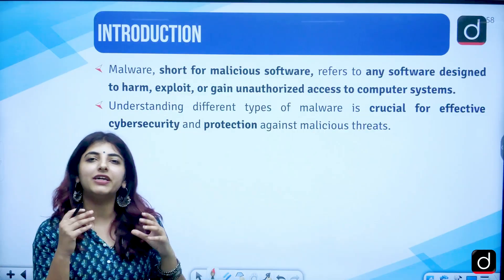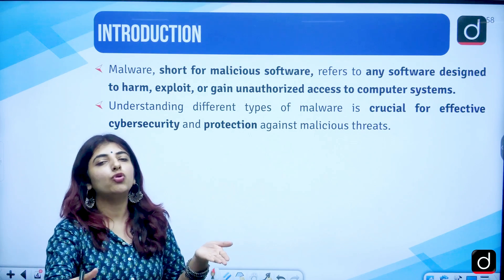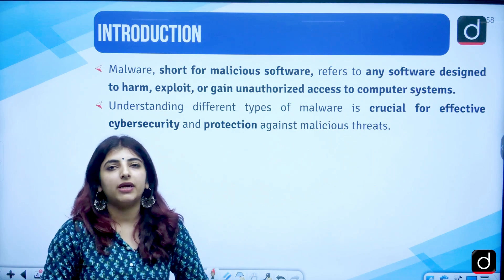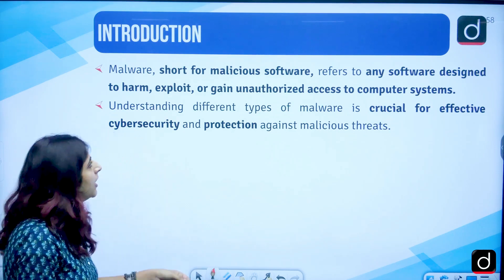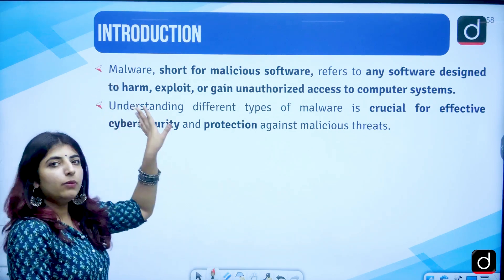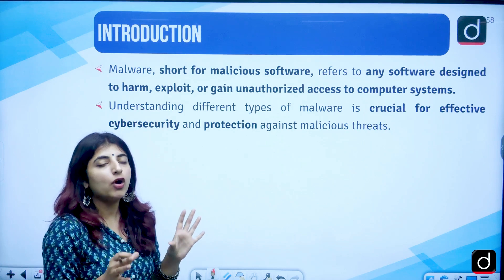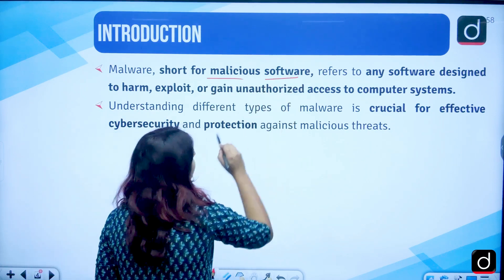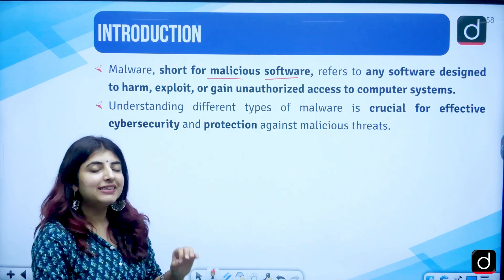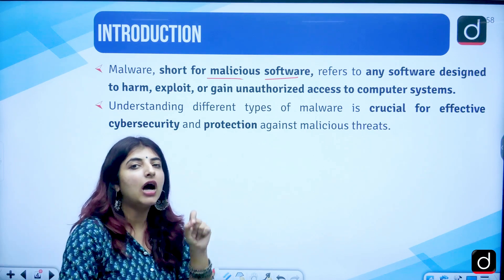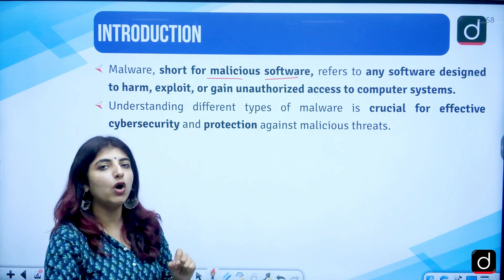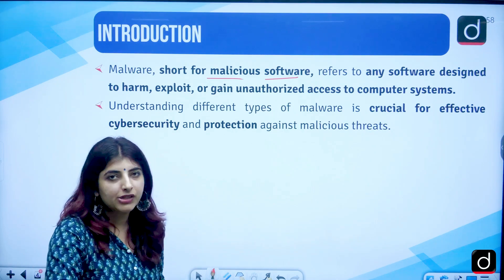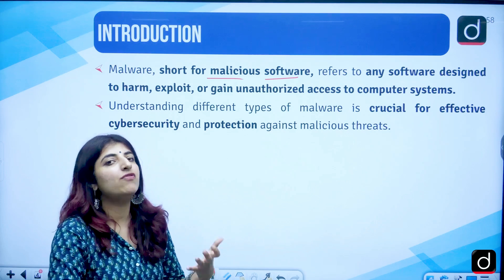First of all, we are going to talk about what is malware, and then slowly delve into the different types and certain examples. Malware is a short form — a combination of two words: malicious software. It means that this software is going to harm your computer one way or the other. We talk about viruses, Trojan horses, and how and why they are there.